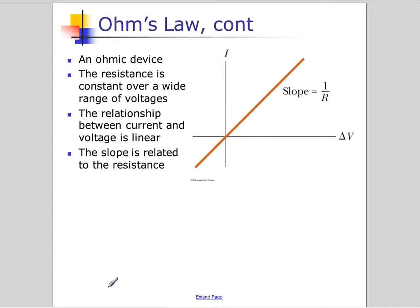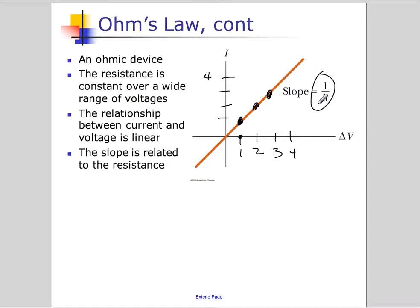An ohmic device is a device where the resistance stays the same no matter what voltage you put on it. As you increase the voltage, you increase the current. One volt will push one amp through the wire, two volts will push two amps, three volts will push three amps — the relationship is linear. The slope of this line is one over R, or one over the resistance. So if you graph voltage on one axis and current on the other, the slope of the line tells you one over the resistance, and you can flip that to find the resistance.